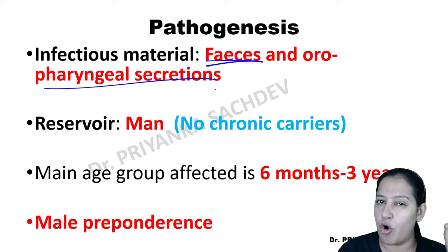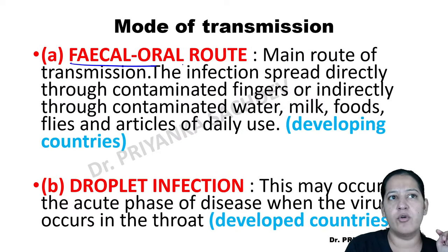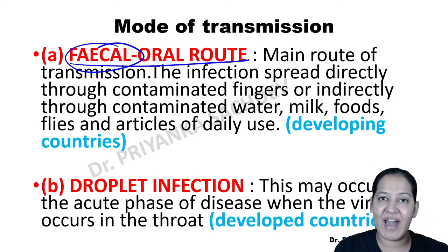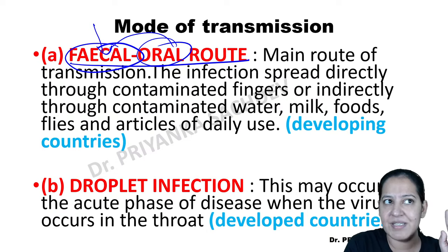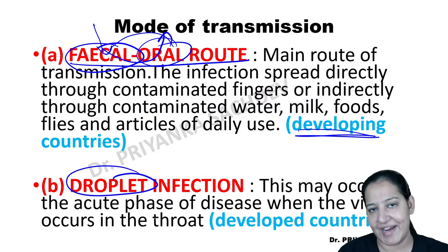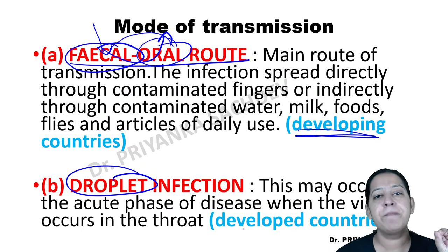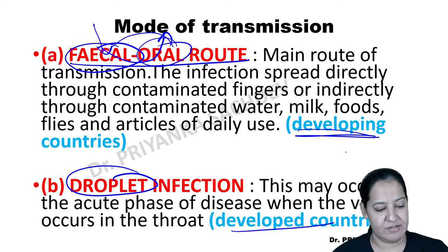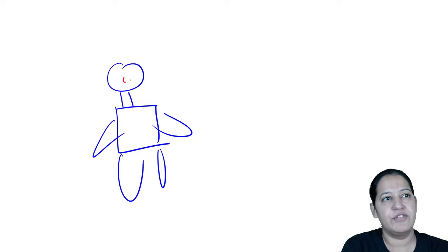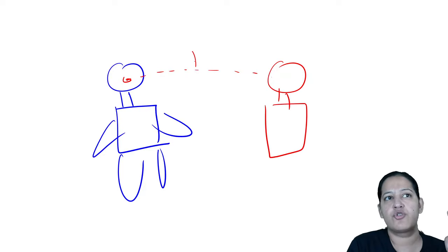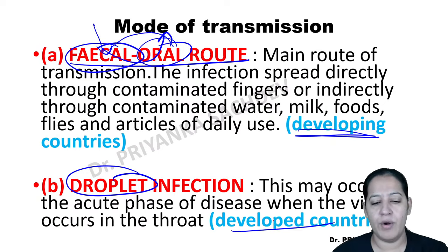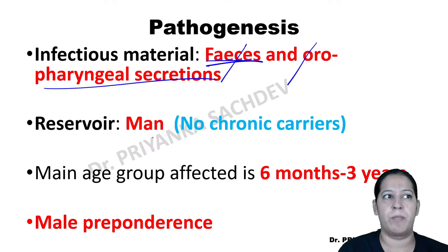The virus is present in feces and throat droplets. Two routes of infection exist: feco-oral route — virus excreted in feces contaminates food and water, consumed by another person — this is the most common route in developing countries. The second route is droplet infection, more common in developed countries, where the virus is shed in oropharyngeal secretions during the initial phase of infection.